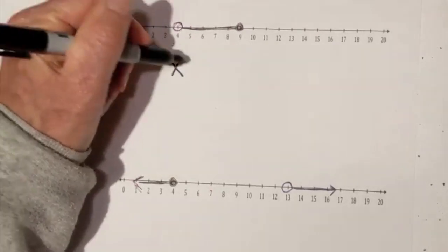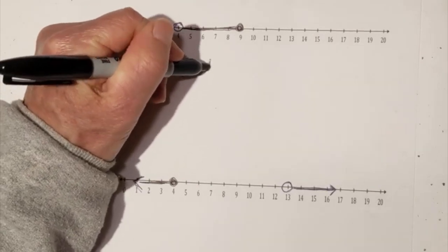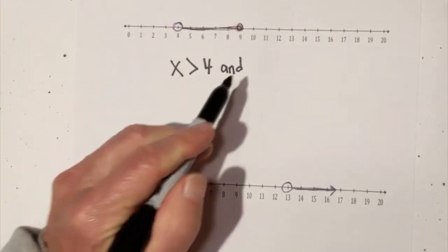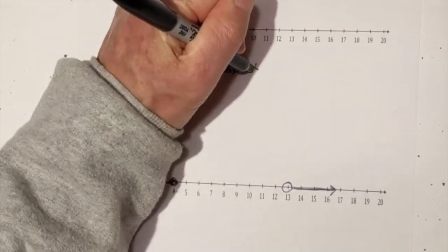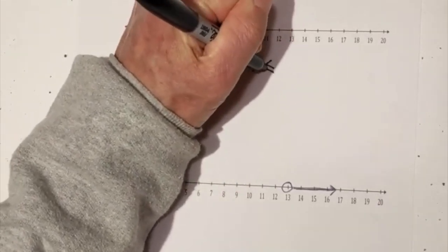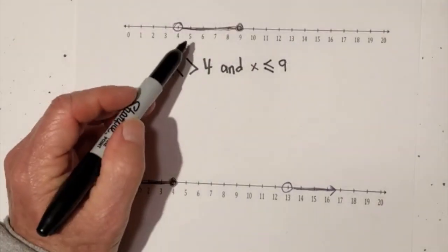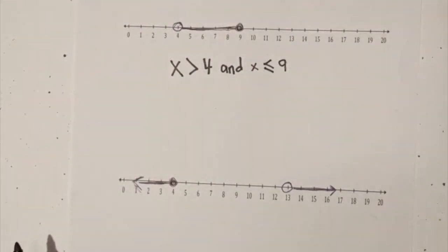So x is going to be greater than 4 and at the same time it's going to be less than and equal to 9. So that's what this number line would look like.